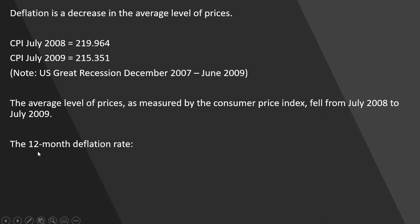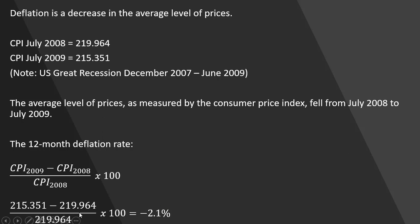Let's calculate the 12-month deflation rate. We're going to use the following formula — just a percent change formula. We're going to use the ending value: the CPI in 2009 minus the CPI in 2008, over the CPI in 2008. Plugging in our values, we get an inflation rate of minus 2.1%. So this is, again, an indication of deflation. Prices fell roughly 2.1%.